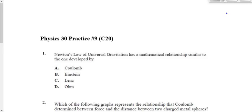I want to take a quick look at practice questions set number 9 and set number 10 here, starting with number 9, of course. Question number 1 on this set says, Newton's law of universal gravitation has a mathematical relationship similar to the one developed by who? So everybody just put down your stuff from the stuff you were working on here and focus on this. This would be Coulomb, yeah. So the answer is clearly Coulomb there.